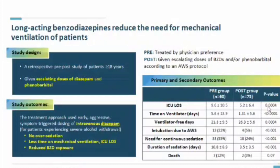Long-acting benzodiazepines reduce the need for mechanical ventilation. A retrospective pre- and post-study over more than 8 years compared escalating doses of diazepam and lorazepam. The outcome showed that early and aggressive symptom-triggered dosing of intravenous diazepam for severe alcohol withdrawal resulted in no over-sedation, less time on mechanical ventilation in ICU or critical care, and significantly reduced overall benzodiazepine exposure.